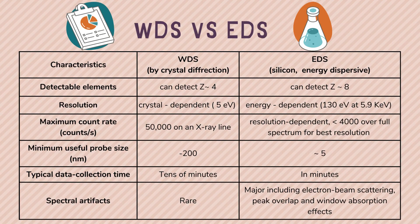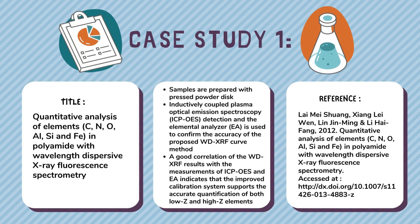Even though EDS and WDS are both done using XRF, they do have many differences. As an example case study, quantitative analysis of elements in polyamide with wavelength dispersive XRF spectrometry used samples prepared with pressed powder disks.